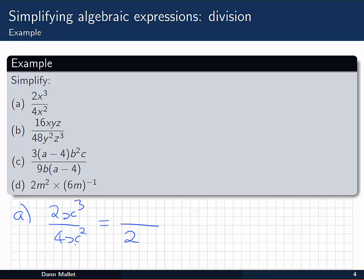Now I've got x³ and x². I'm going to remember my index laws, and they say that that's x to the 3 minus 2, which is x to the 1, or just x. So I can actually write this in its simplified form as x over 2.